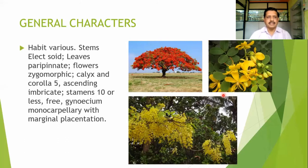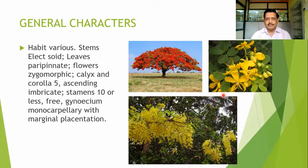When we talk about the general characters of the family, it has cosmopolitan distribution and varied types of habits, from simple herbaceous species to large tree habits. Leaves are normally pinnately compound, and may be paripinnate in most cases. Flowers are zygomorphic; calyx and corolla are pentamerous. It is an ascending type of flower, and the corolla shows imbricate type of aestivation. Almost all members have a stamen number fixed at almost 10, or it may be less due to staminodes. They are free. Gynoecium is monocarpellary with marginal placentation.